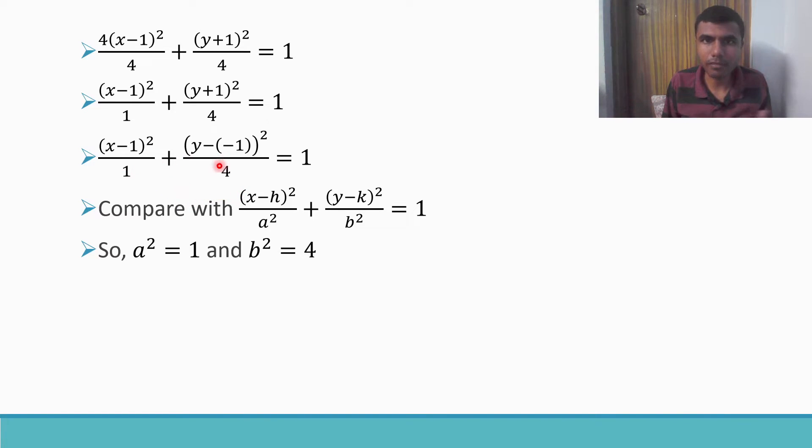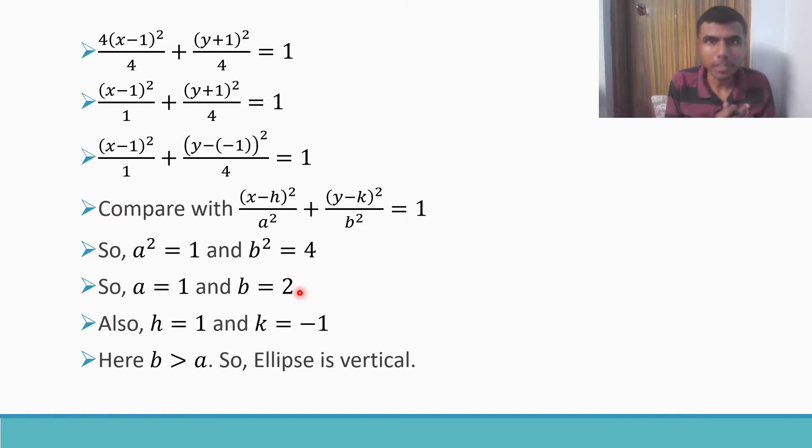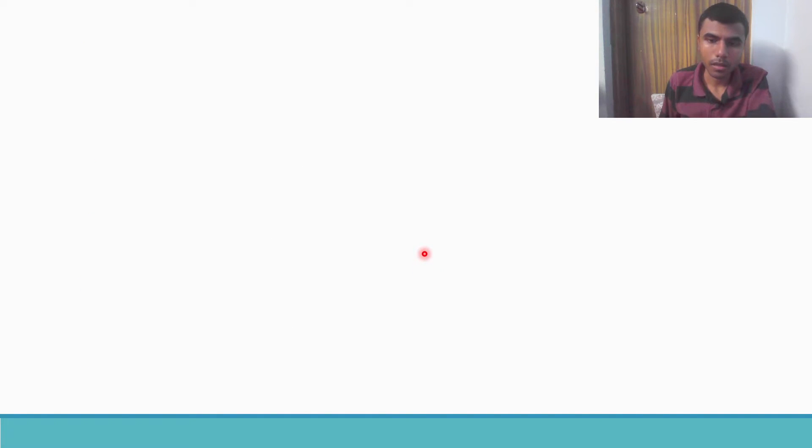You can do it anyways. After this you can compare (x-h)²/1² + (y-(-1))²/2². If you'll compare, a² is 1 and b² is 4. If you see, h is 1, x - 1 is here and x - h is here, so h is 1. Here I have y - k, here I have y - (-1), so k is -1. Now if you'll observe one thing, a is 1 and b is 2, so b is actually greater than a. Whenever b is greater than a, then the ellipse is vertical. Till now we have not started with the question yet, if I were to say the actual calculations. We just found out the a, b, h and k.